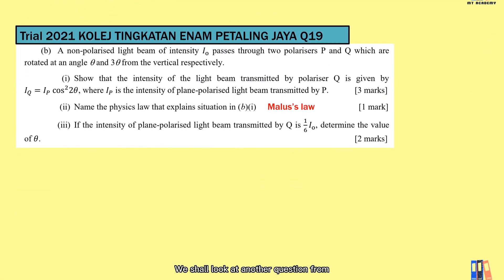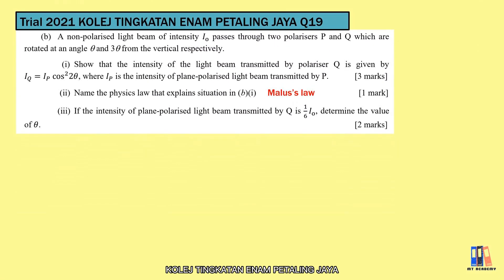We shall look at another question from Kolej Tingkatan Enam Petaling Jaya. It mentions the polarizers P and Q are rotated at angles θ and 3θ. So we look back to the definition and direction. The angle in the equation is the angle between the vibration axis of light and the polarizing axis. Therefore, the equation here is a little bit different but applies for this case. It is IQ equal to IP cos² 2θ.